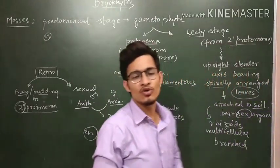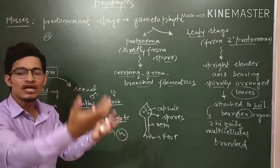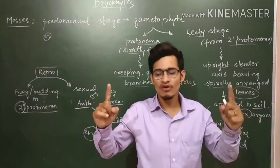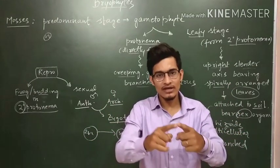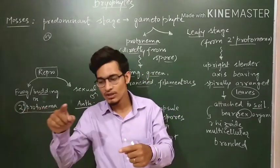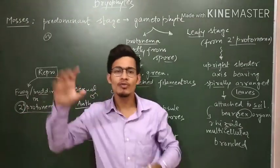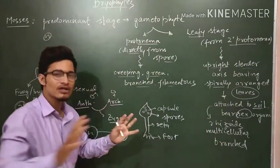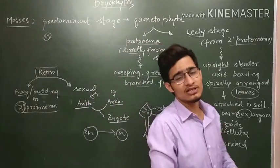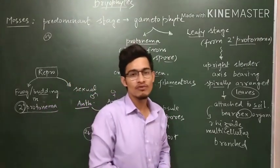So there are two stages: the first is protonema, which will asexually form the second stage. The second is the leafy stage, which has sexual organs - antheridia and archegonia. They form gametes which fuse to form a zygote. The zygote undergoes reductional division to form spores. There is foot, seta and capsule; the capsule contains the spores. When the capsule opens, the spores are dispersed through various complex mechanisms and give rise to the new plant.